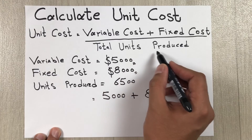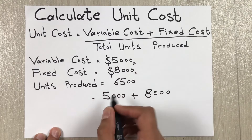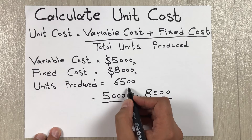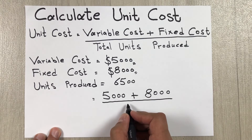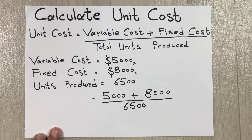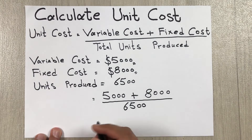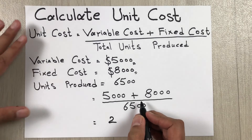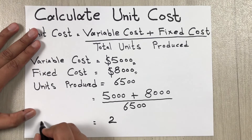We divide it by the total units produced, which is six thousand five hundred. When we do this calculation, our answer will be two — so this is our unit cost.